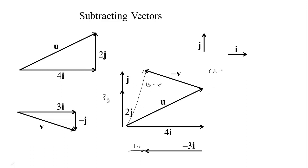So we have this vector u. It's 4i plus 2j. And v is 3i minus j. So u minus v, we can just subtract the components. 4 minus 3 is 1i. 2 minus minus 1 is 3.